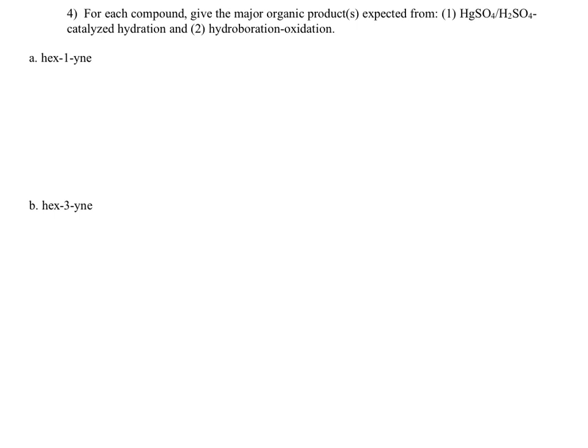We're going to start by taking our starting alkyne structure and reacting it with mercury sulfate and sulfuric acid catalyzed hydration. We'll also look at what would result from a hydroboration oxidation reaction of the same starting material to compare and contrast the regioselectivities of these two reactions.